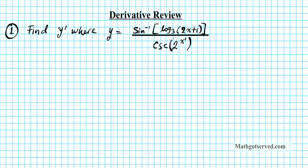If we take a look at this, you notice that we have the quotient of two functions. So we're going to have to use the quotient rule here. The function in the numerator we're going to call u, and then the function in the denominator we're going to call v.